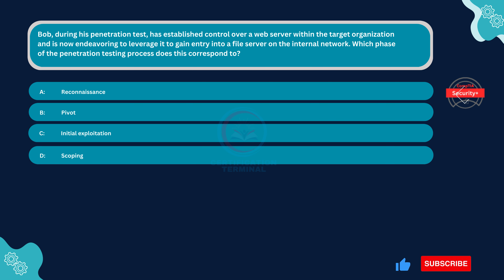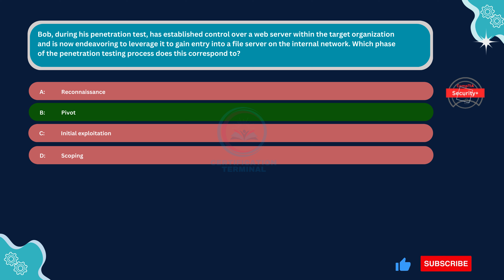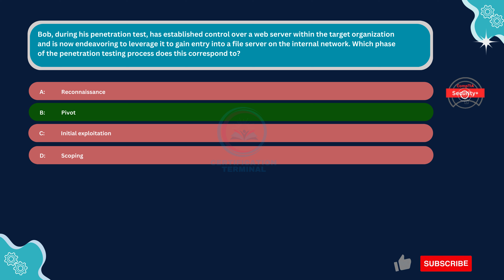The correct answer is Option B, pivot. In the penetration testing process, pivoting refers to the stage where an attacker, having gained initial access to one system, attempts to use that access to further penetrate the network and access other systems — such as the file server — within the target organization's internal network. During this phase, the attacker seeks to extend their foothold and exploit the compromised system's position to access additional resources.